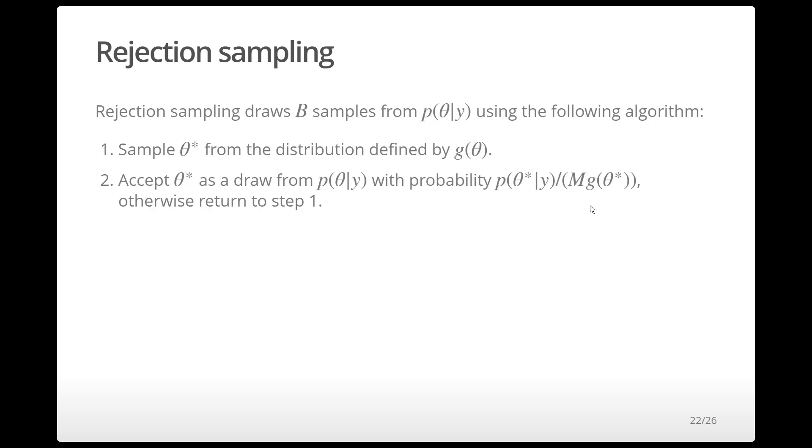If you reject the proposed value of theta star, return to step 1. Otherwise, keep the value as part of your sample. Step 3 is to repeat step 1 as many times as necessary in order to get the number of samples you desire.